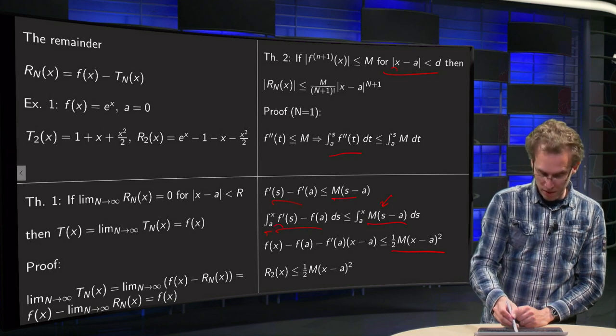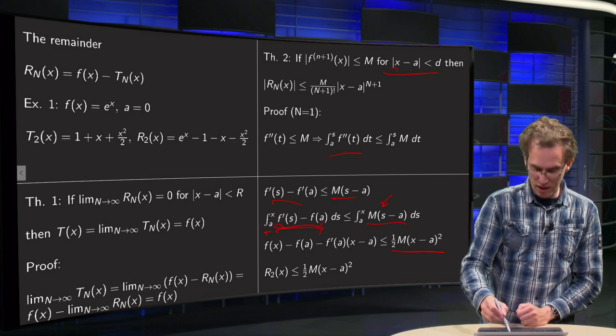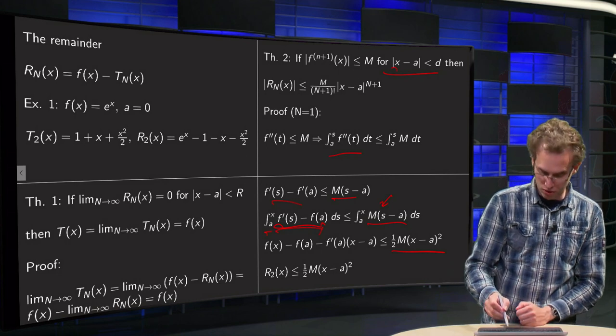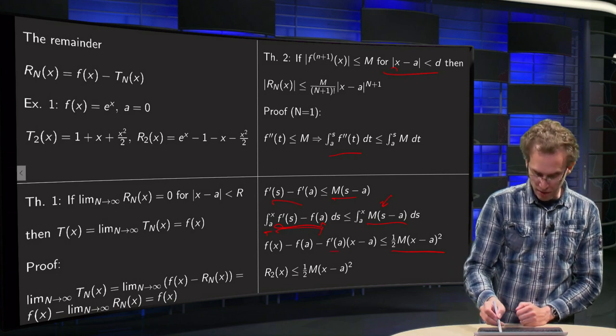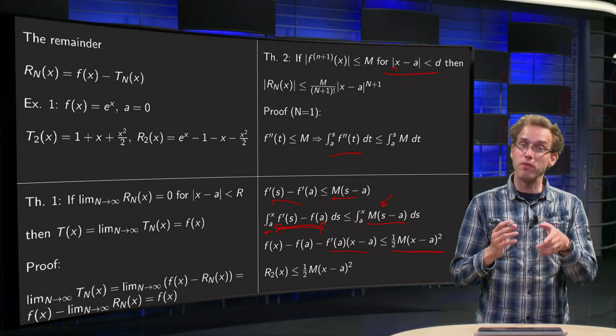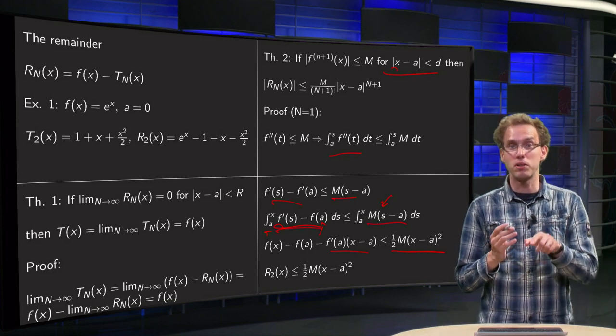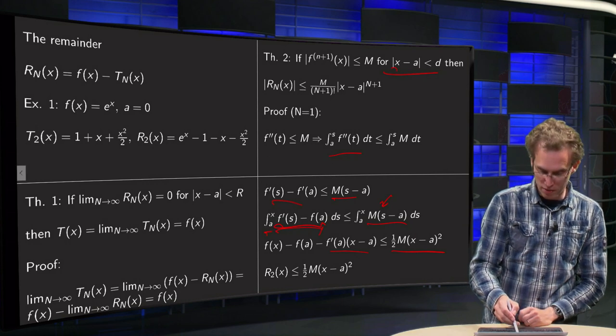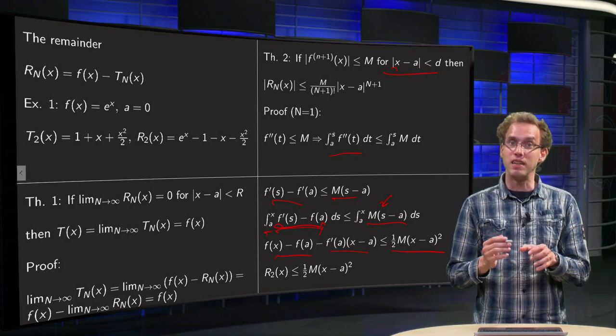Then we integrate again, but now with respect to s from a to x on the left hand side, also on the right hand side. Now we have to be slightly more careful on the right hand side. So this will give us M times half times (s minus a) squared. Lower boundary drops out, and here the upper boundary gives me a half times M times (x minus a) squared.